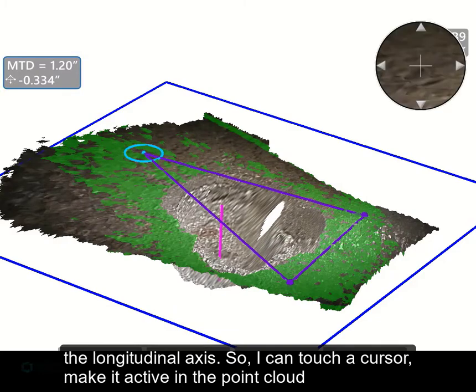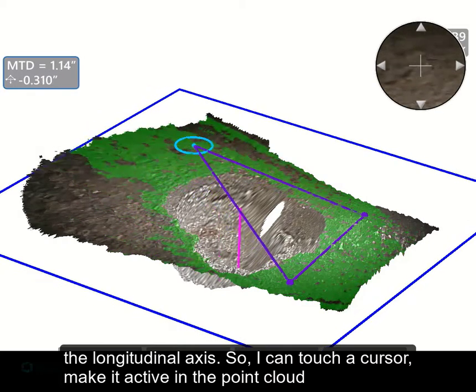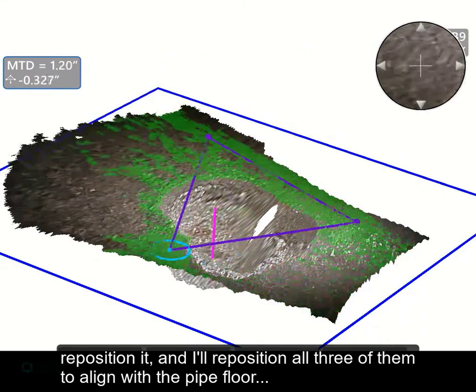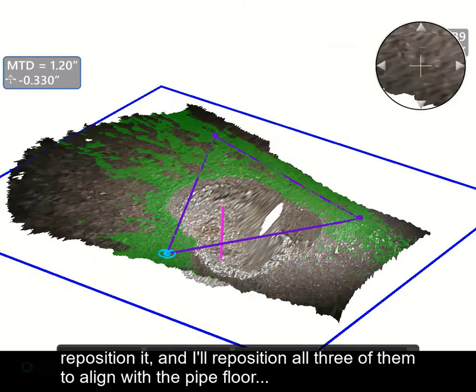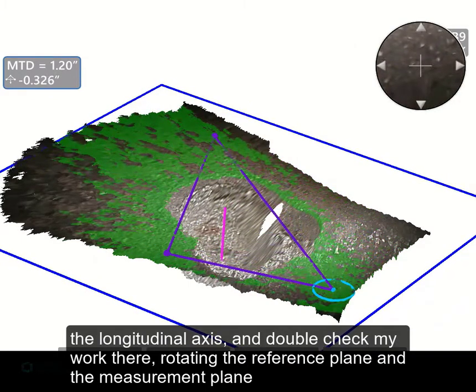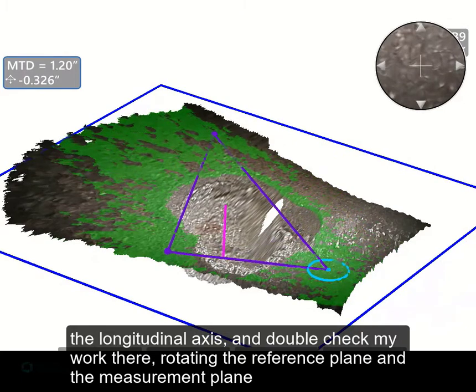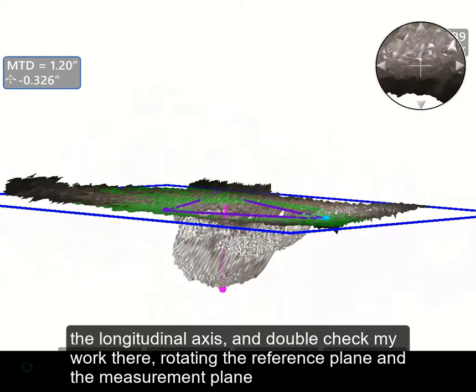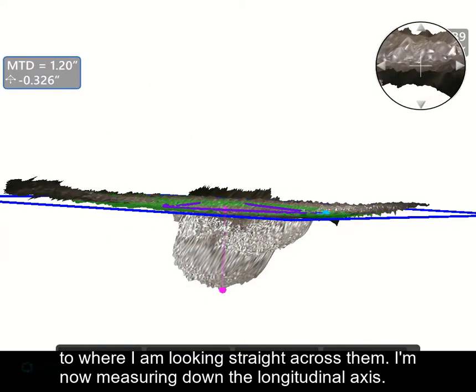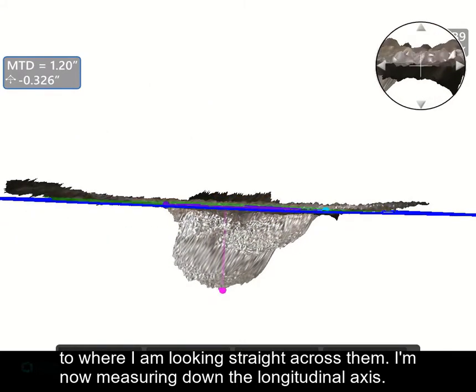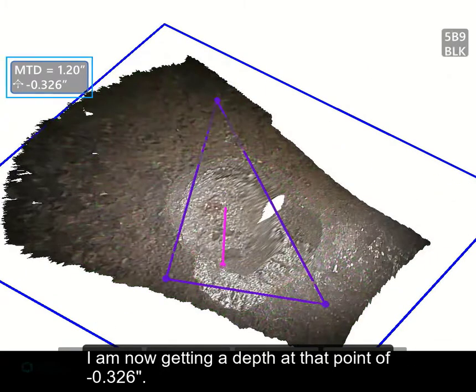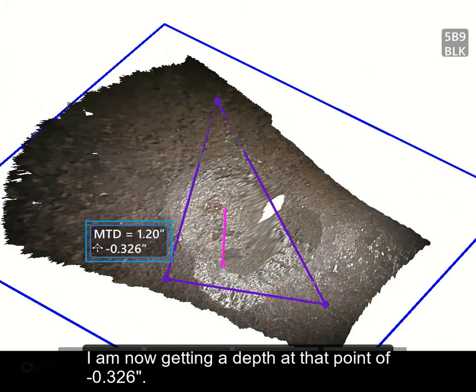So I can touch a cursor, make it active in the point cloud, reposition it, and I'll reposition all three of them to align with the pipe floor, the longitudinal axis, and double check my work there, rotating the reference plane and the measurement plane to where I'm looking straight across them. I'm now measuring down the longitudinal axis. I'm now getting a depth at that point of 326 thousandths.